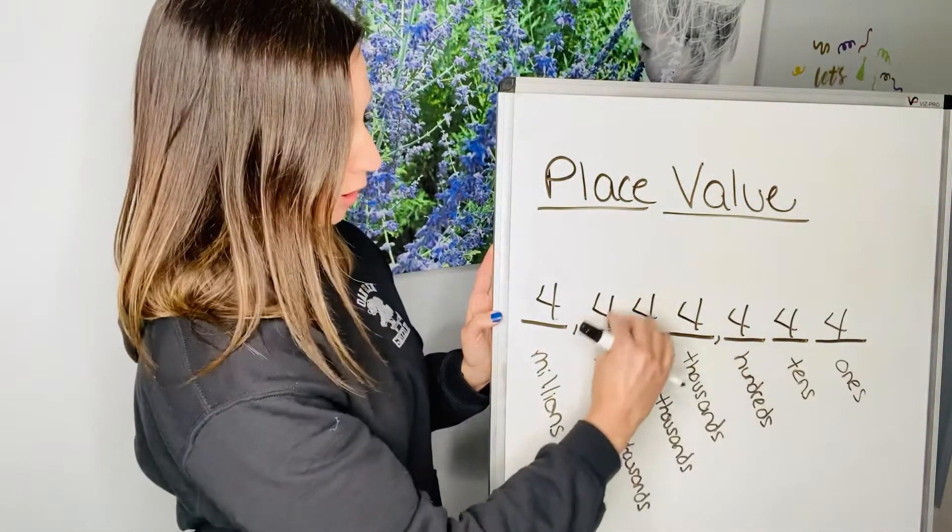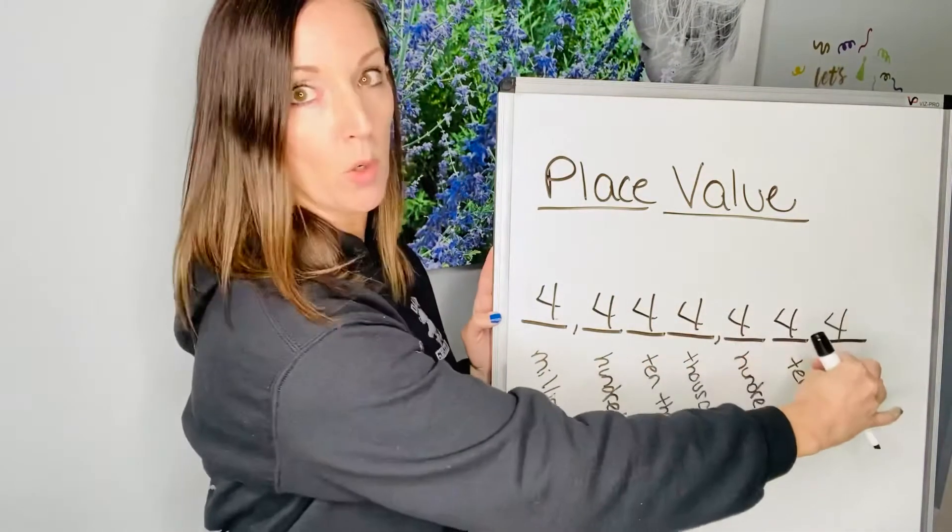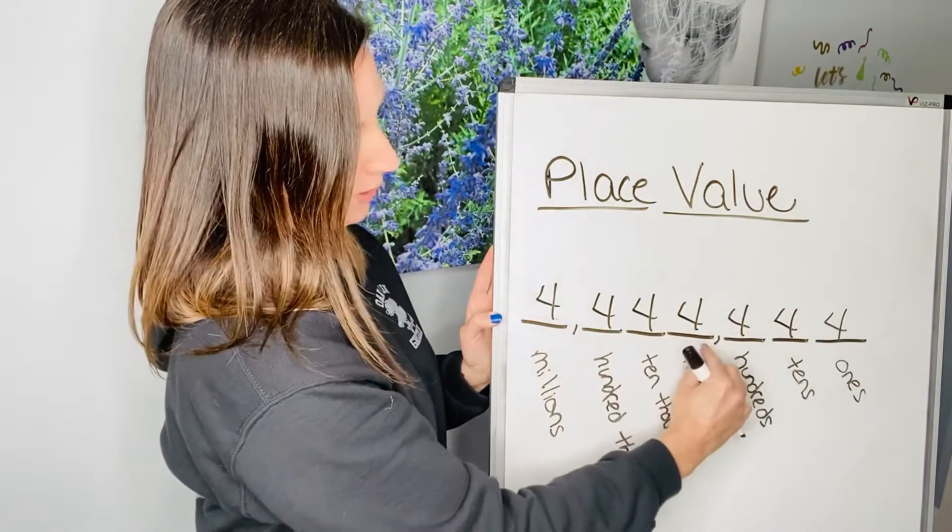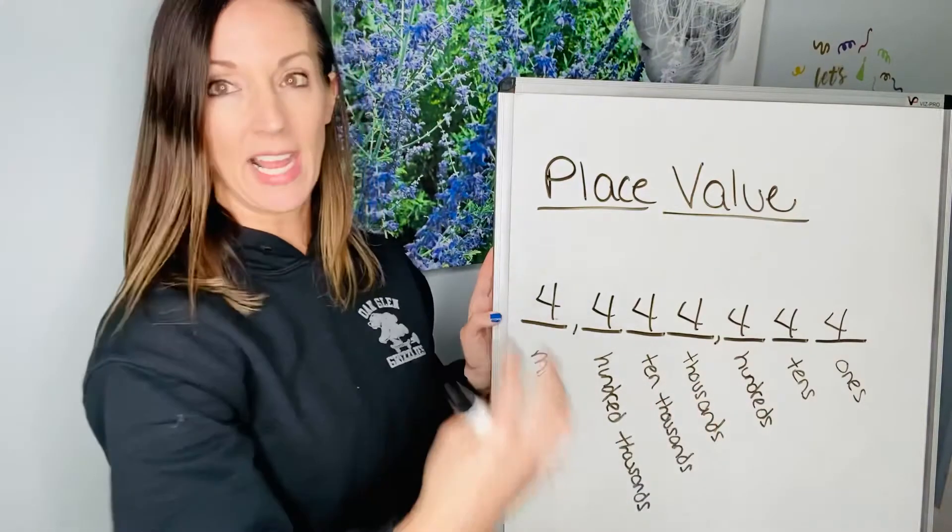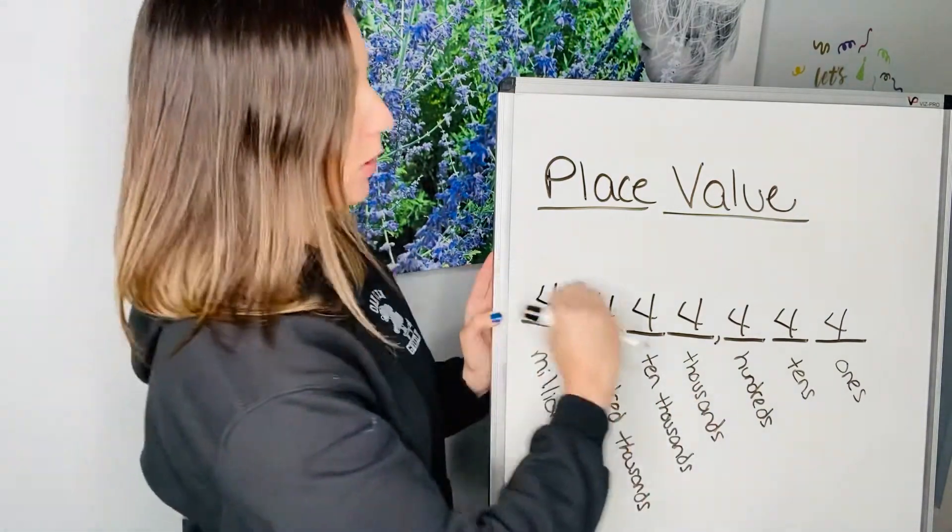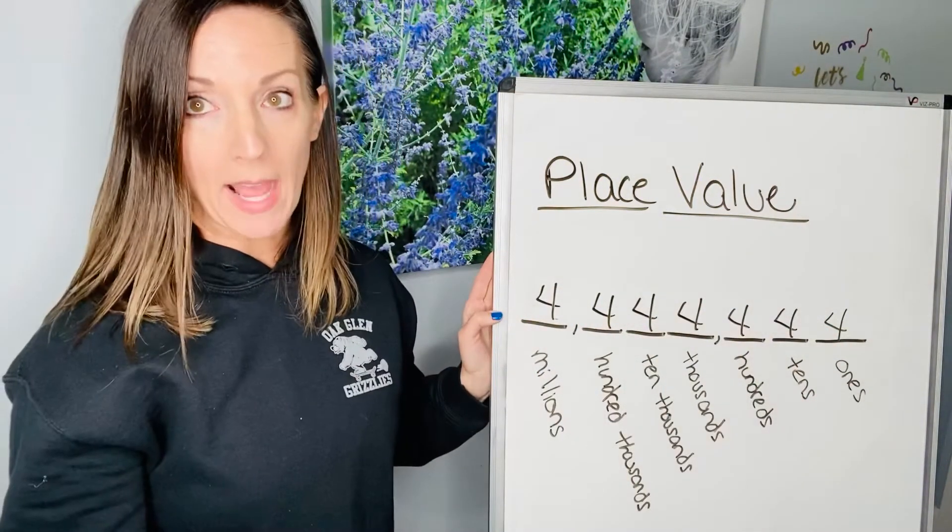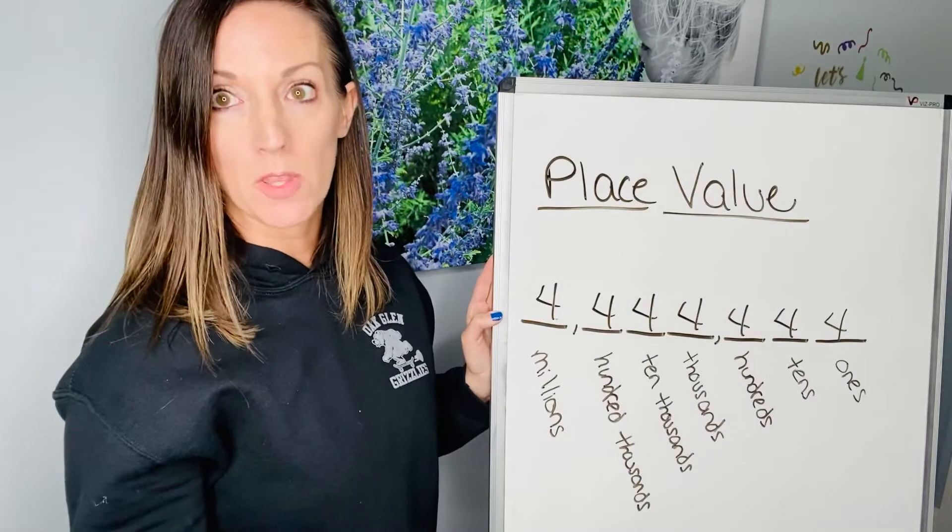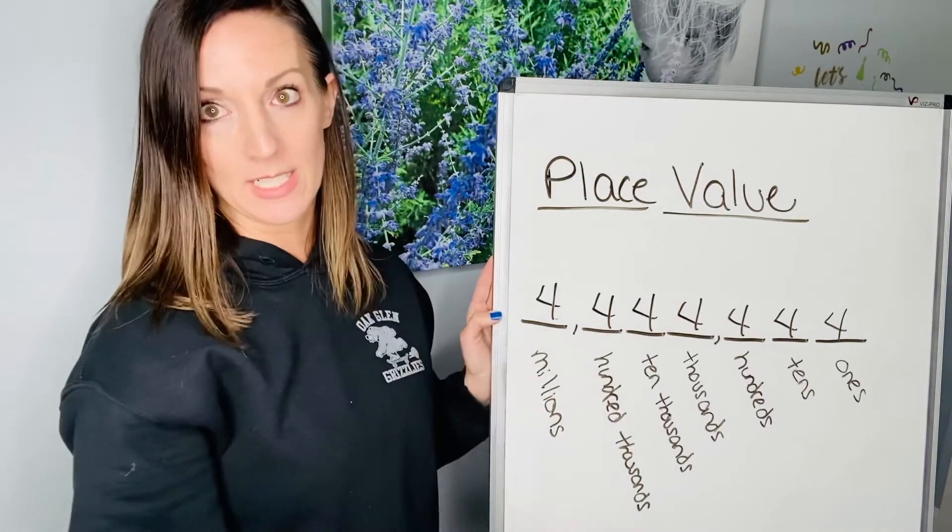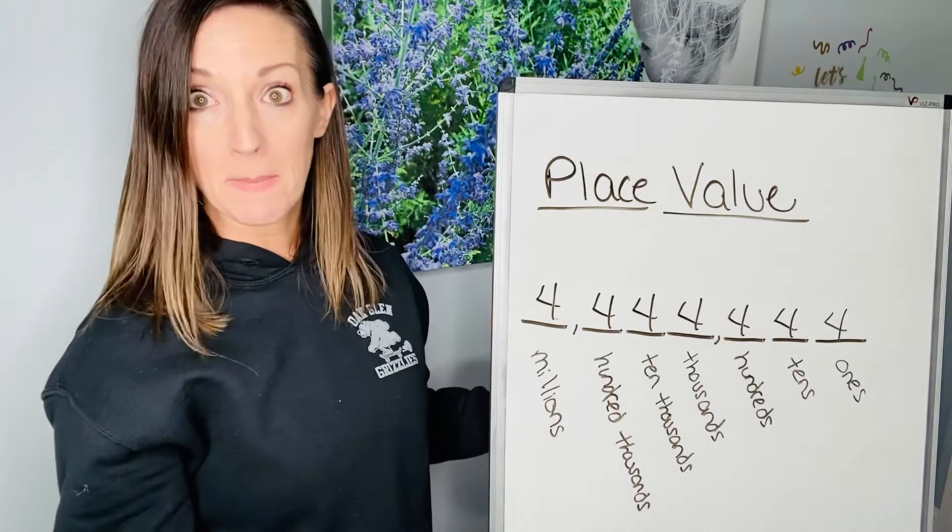Notice I said four hundred and forty-four, four hundred and forty-four, but after this four hundred and forty-four, I said thousand. That's how you read those bigger numbers. I have a fun game that I'll share with you guys called name that number, and you can practice place value to get your biggest number.